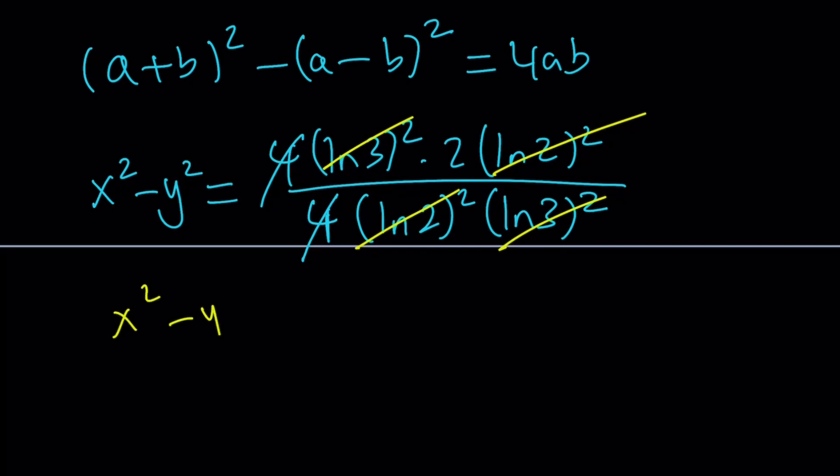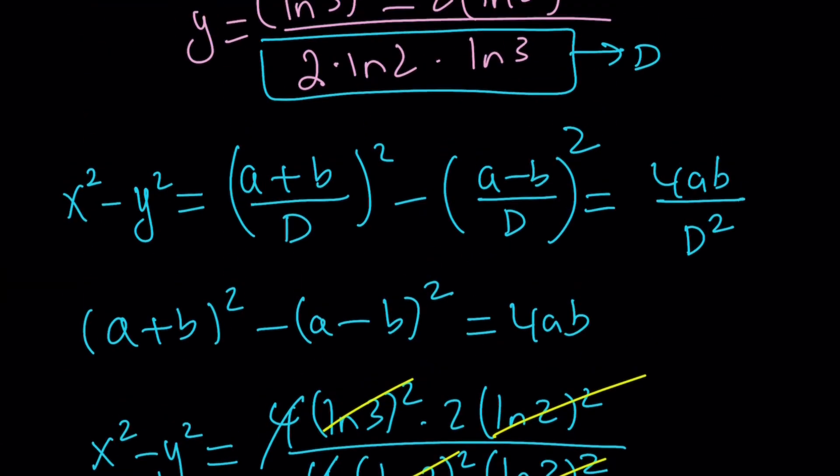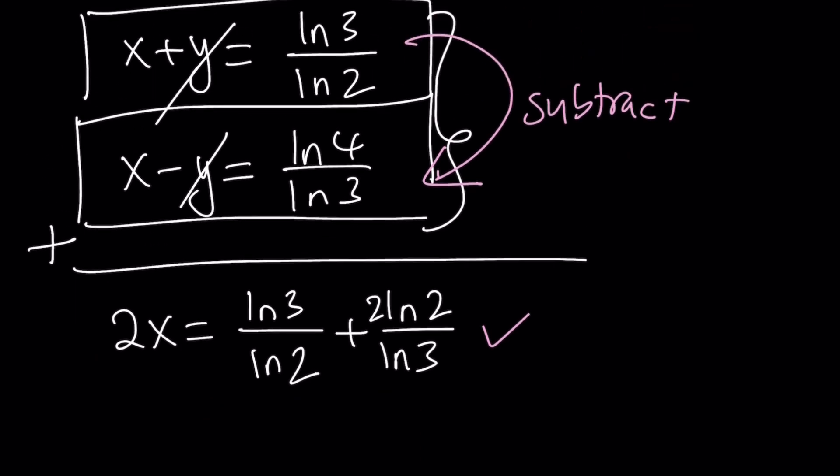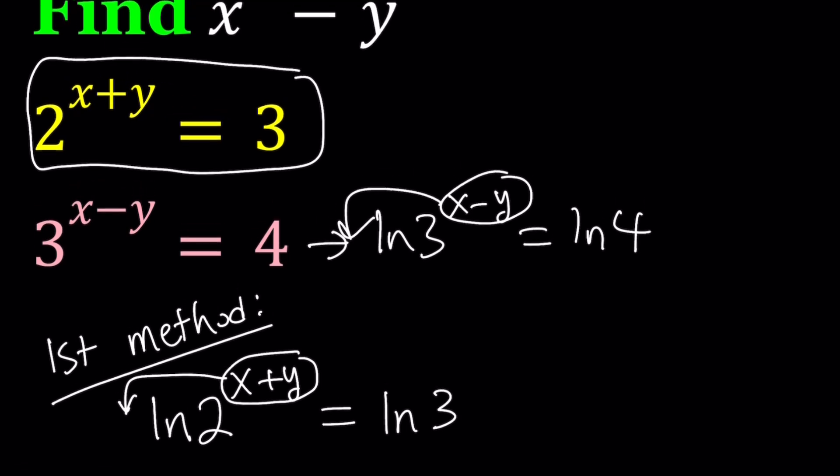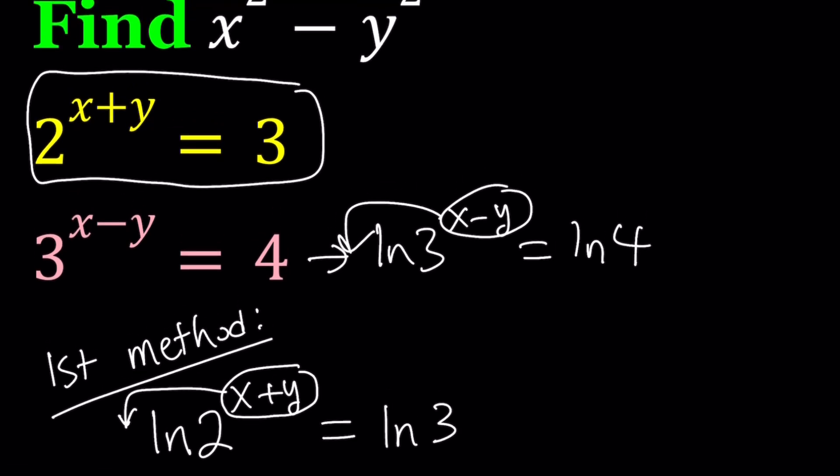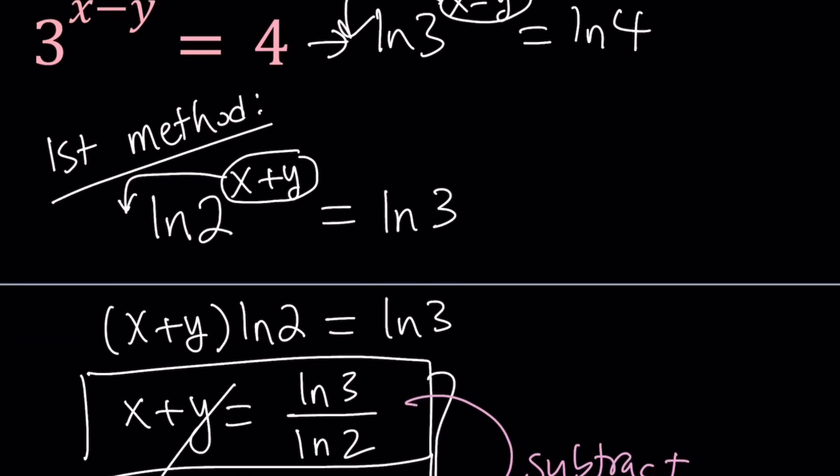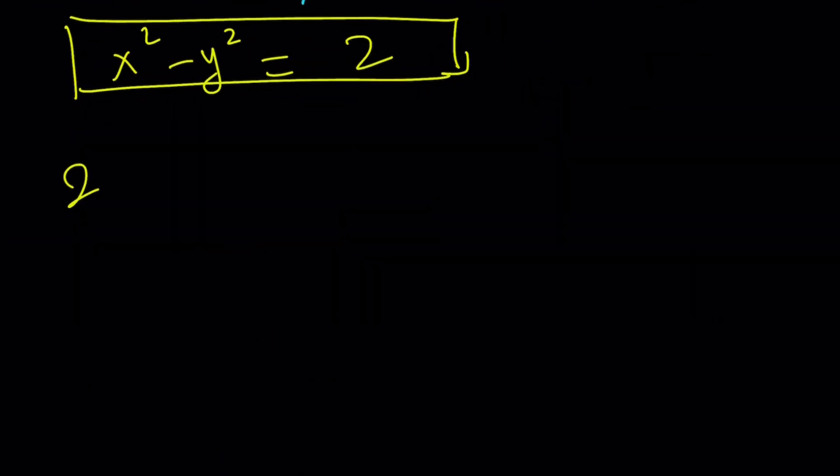So we get x squared minus y squared equals 2 as the answer. And what were we looking for? We were looking for x squared minus y squared. Great, so by using logarithms, we can find the answer. But the answer is fairly simple, so it kind of tells us there must be another way to do it. Obviously, I know some people are going to complain about it, and they're going to say, hey, nobody is going to use the first method, but it's still a method. Anyways, let's take a look at the second method, which is much nicer.